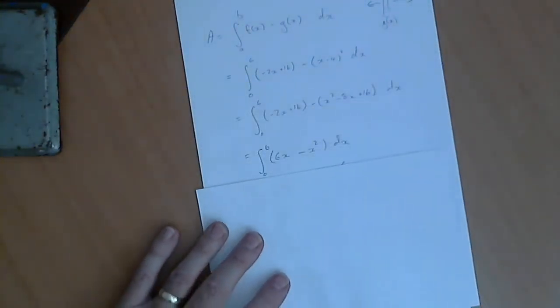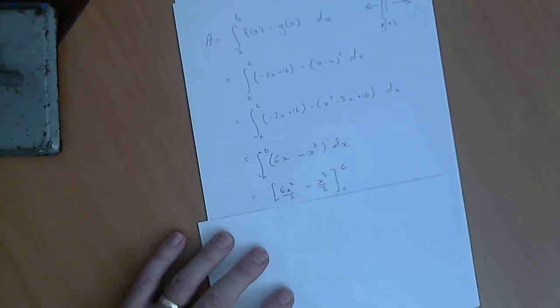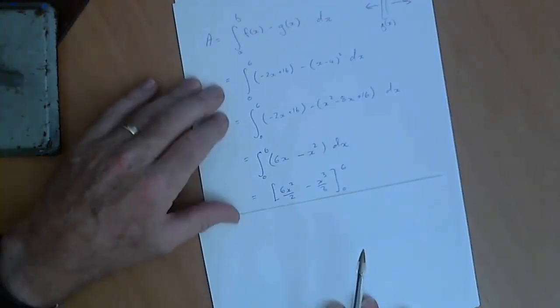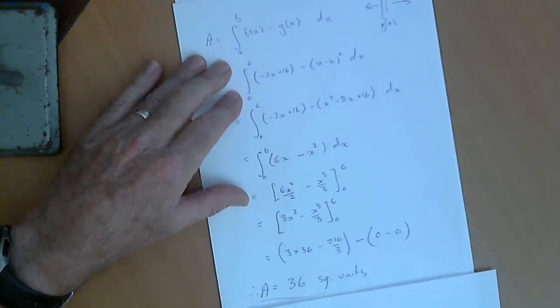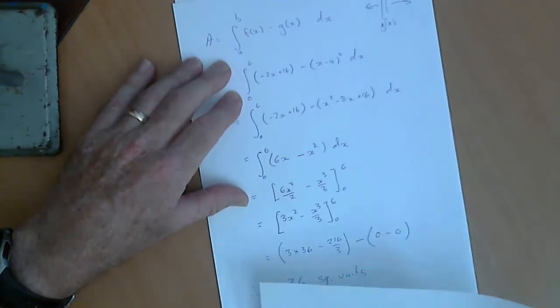Simplify that expression inside the integral. Find the primitive function of it, evaluate it between 0 and 6 by substitution, and you end up with 36 square units.